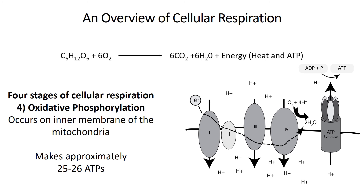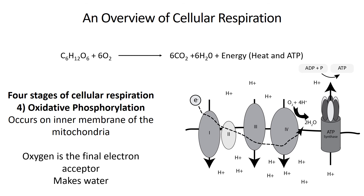Oxidative phosphorylation has a very high energy payoff. For each molecule of glucose we get 25 to 26 ATPs — a lot more than the four we got from glycolysis and the Krebs cycle. Oxygen is the final electron acceptor. It removes electrons from complex four and immediately forms bonds with protons floating around in the matrix, forming water. Having oxygen present is critical because as it removes electrons from the electron transport chain, it allows electrons to continually flow through, pumping protons into the intermembrane space, maintaining the electrochemical gradient, and continually making ATP.